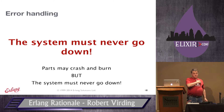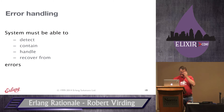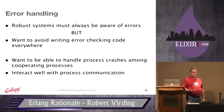Robust systems must always be aware of errors, but you don't want to write error-checking code everywhere — it explodes the code and you're always going to get it wrong. The classic Unix programmer ignores return values from every system call anyway. What we want is to avoid writing error-checking code everywhere and to handle process crashes among cooperating processes. The general case: you'll have a bunch of processes working together, and if one crashes the others really can't do anything sensible, so you might as well crash them anyway.